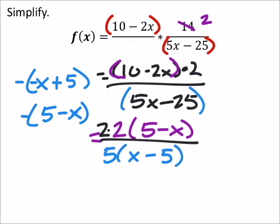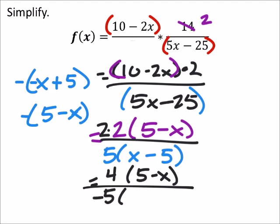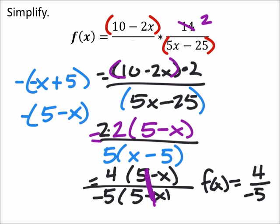I'm going to rewrite this whole thing, but I am going to multiply those two 2s. I've got 4 times 5 minus x all over, well, that would be negative 5. And we made that 5 minus x, right? Those are going to cancel out, and that gives us f of x equals 4 over negative 5, or negative 4 fifths. Any one of those will work.